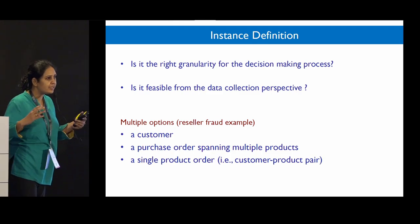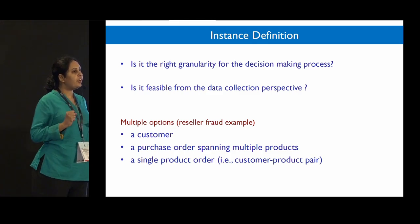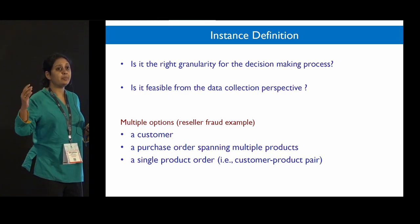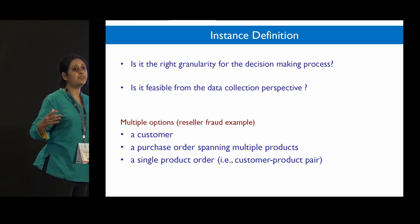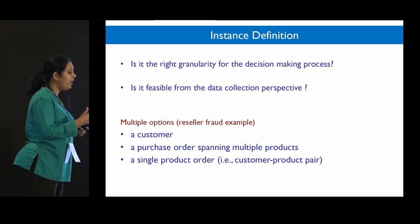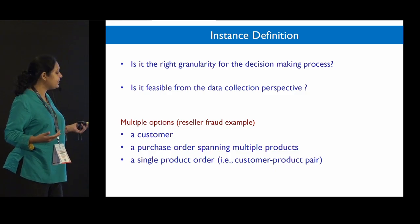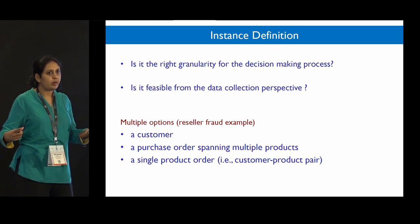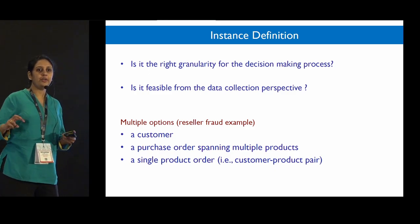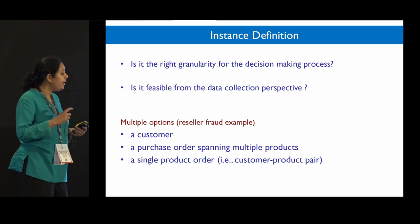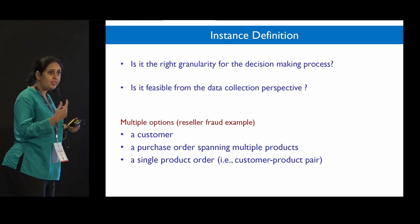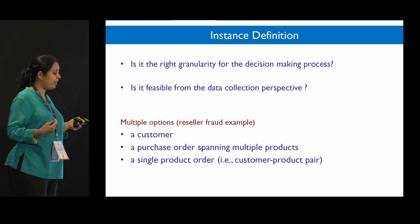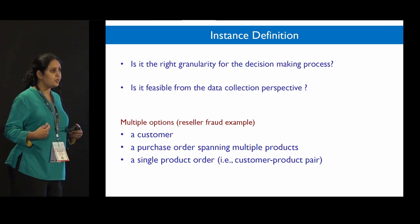Let's start with the instance. To figure out the definition of an instance, we need to ask: is this the right granularity from a decision-making perspective, and is it feasible from a data collection perspective? Going back to the reseller fraud example, the instance could be a customer, a complete order with multiple products, or a customer-product pair. If the decision-making involves blocking or not, we might not want to block an entire customer or order, so the customer-product pair makes more sense.